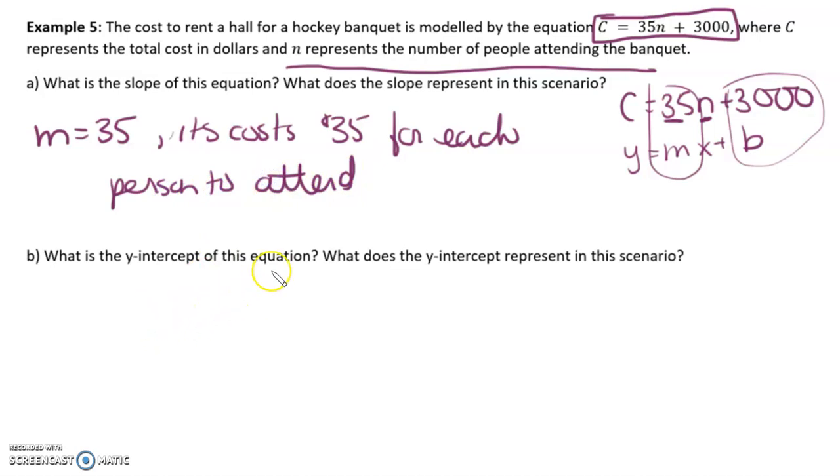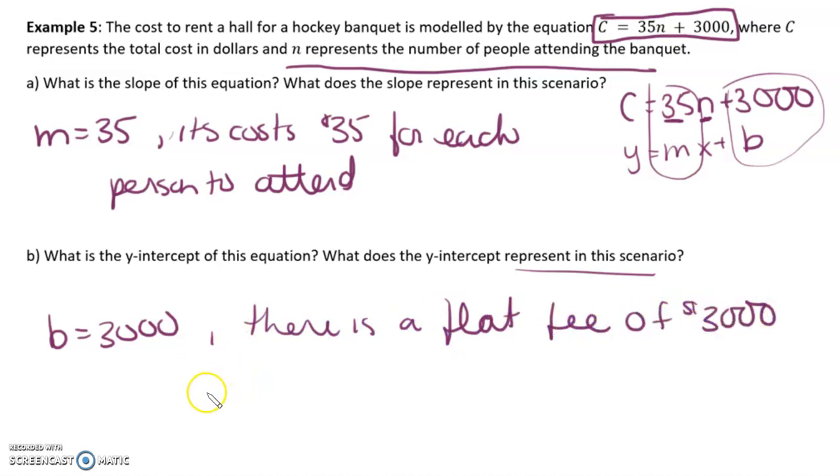And b, what is the y-intercept in this equation? We said it was 3,000. And what does it represent? Okay, there's a flat fee of $3,000 to hold the banquet.